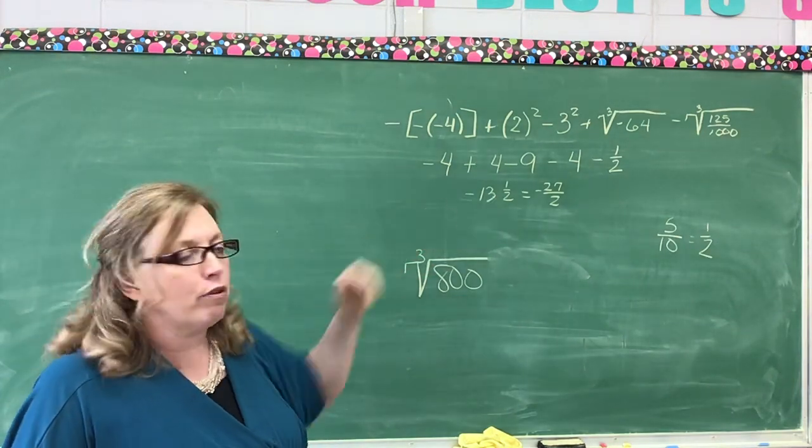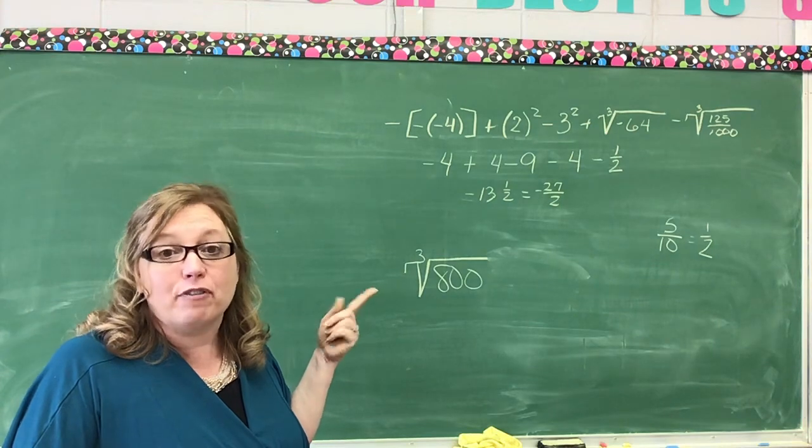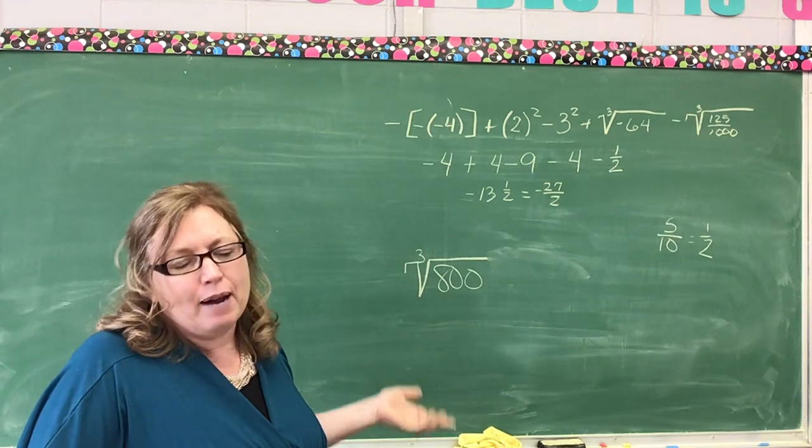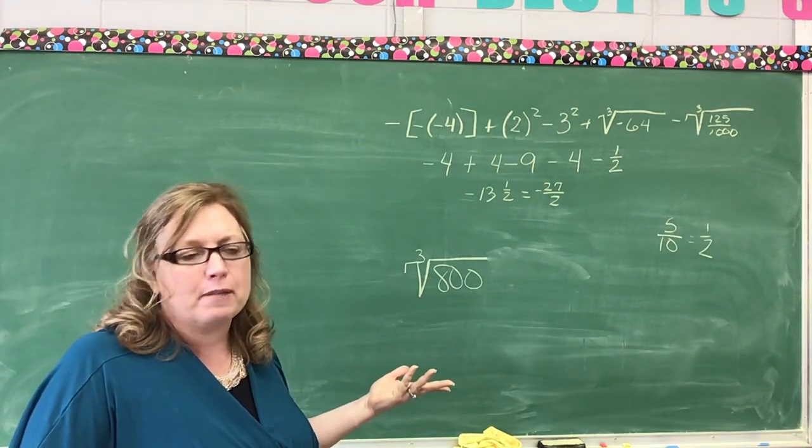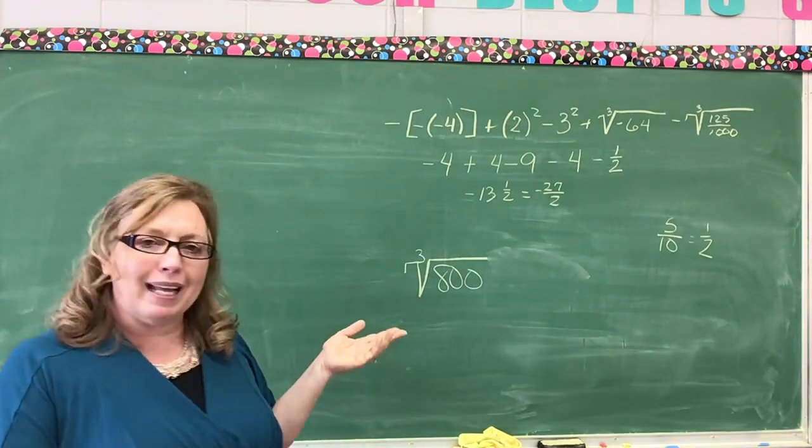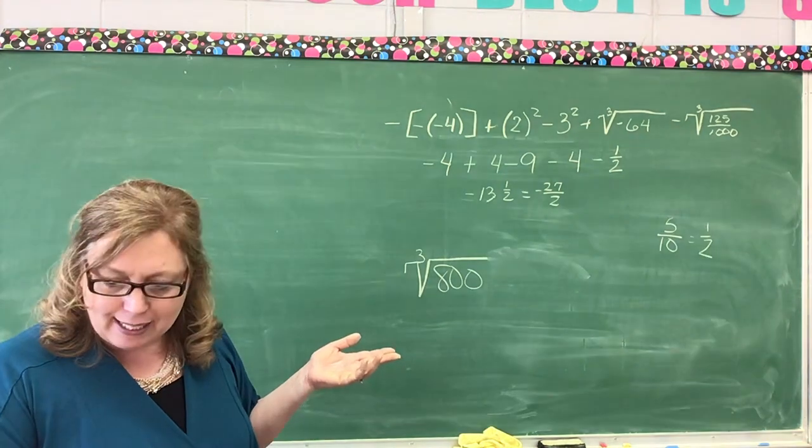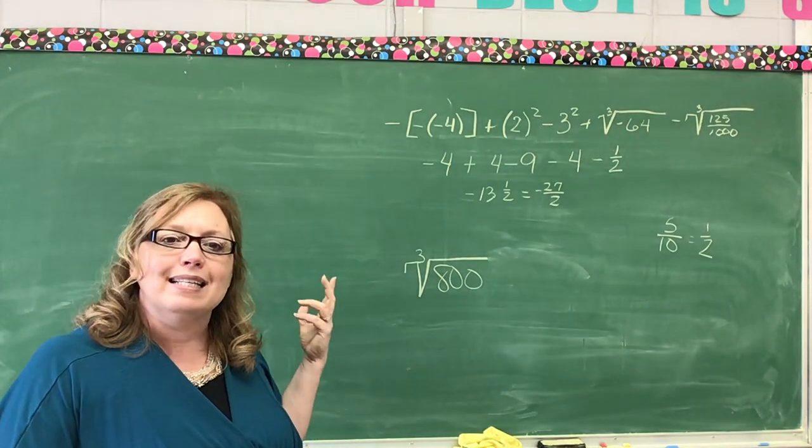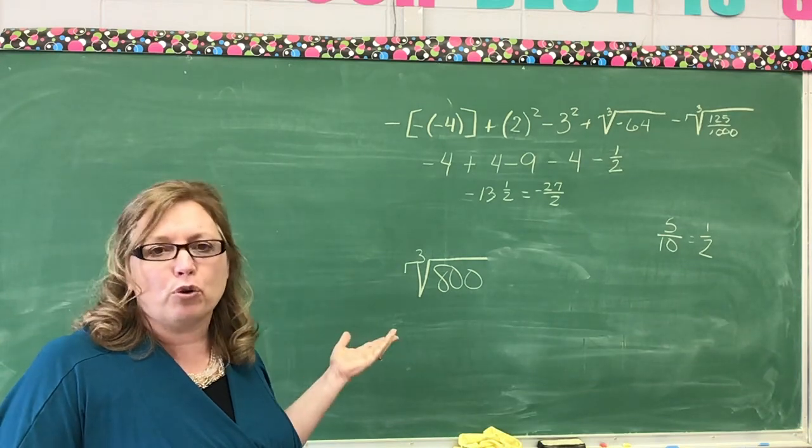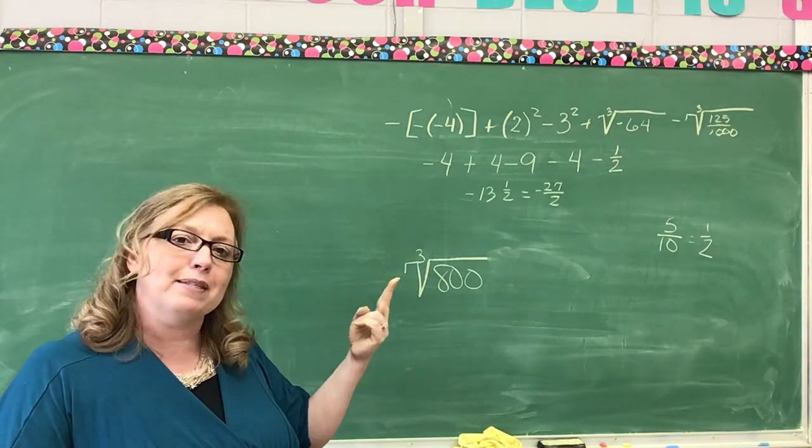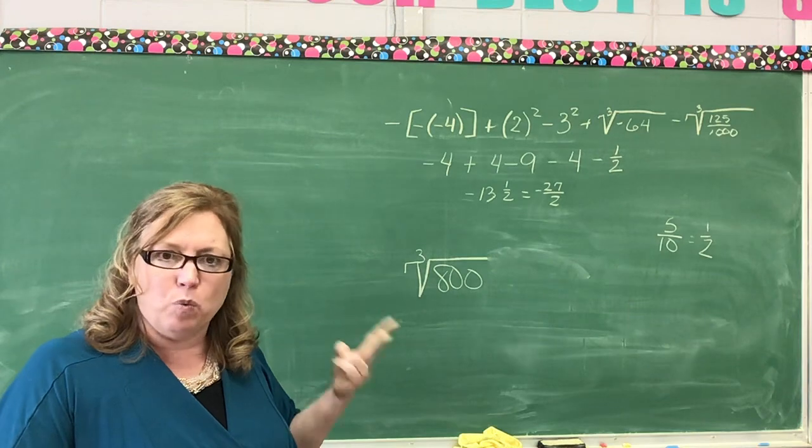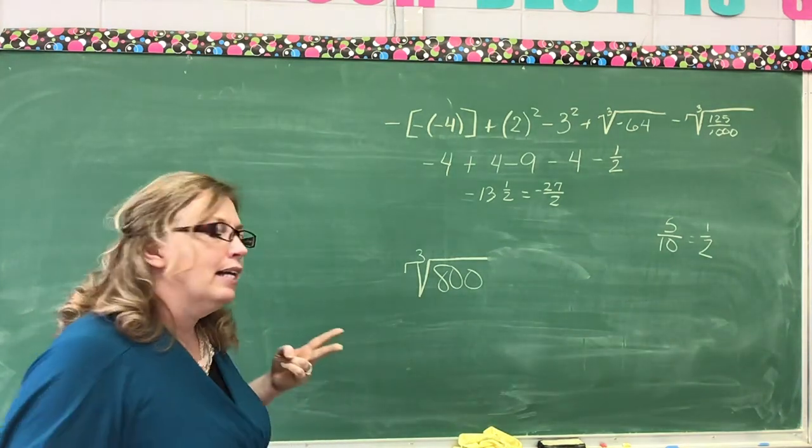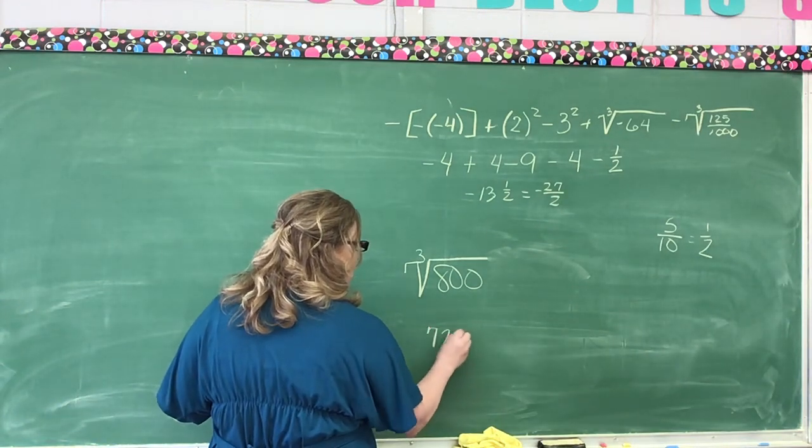When I did the third root of 125, first of all, I've done it enough now that we've done it in class that you probably know that, oh, I know that it's 5, because we've done it so many times. Now, when you get a number like 800, it doesn't come out nice and even, so you have to think it through. Well, what is 9 to the third root? 9 times 9 is 81.